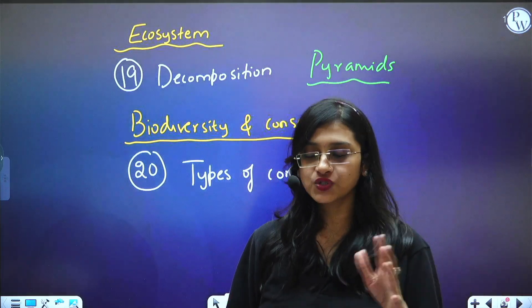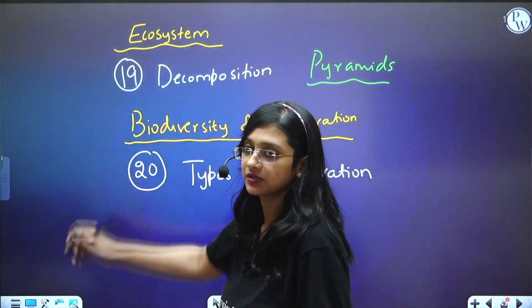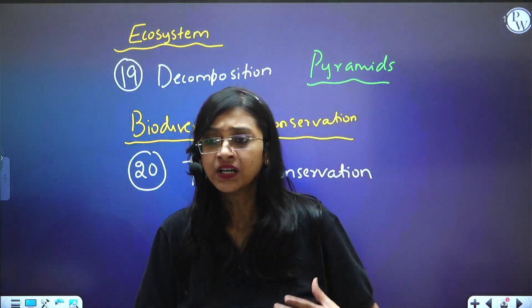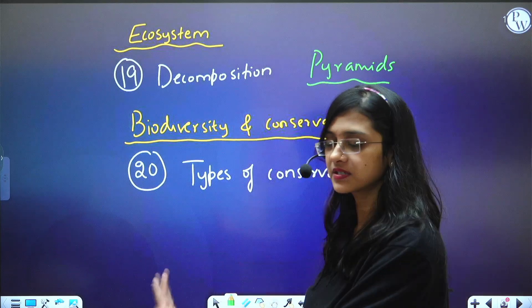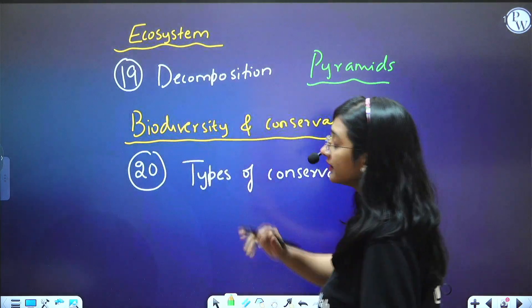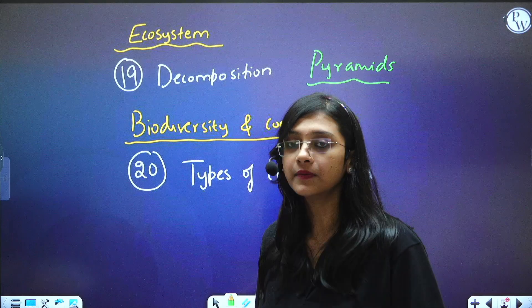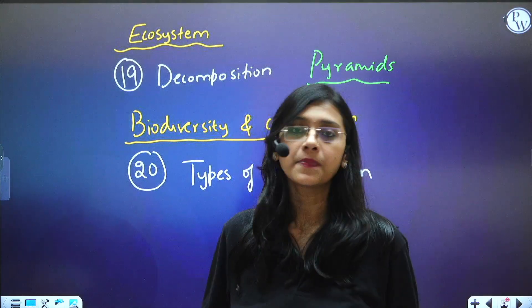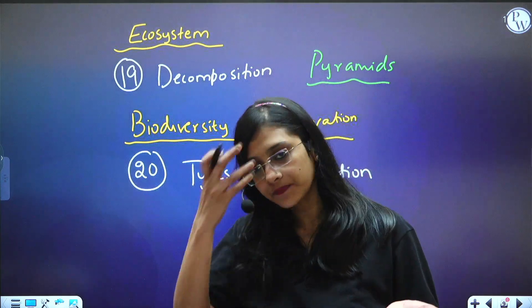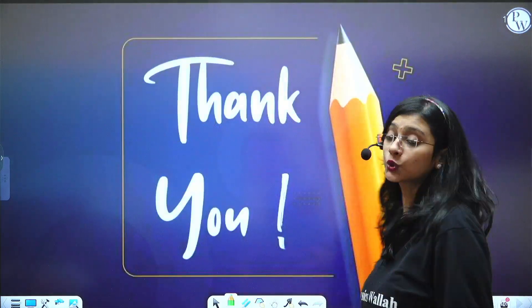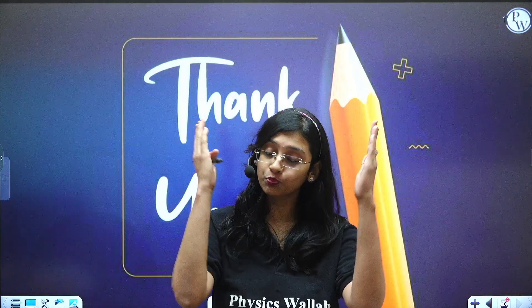From Ecosystem, questions are coming from decomposition for the past two to three years — including detritivores, catabolism, and all concepts under decomposition. Under Biodiversity and Conservation, types of conservation — ex-situ and in-situ — along with their examples, are very important as questions come every year from these. These are the top 20 topics you must study for NEET 2024.